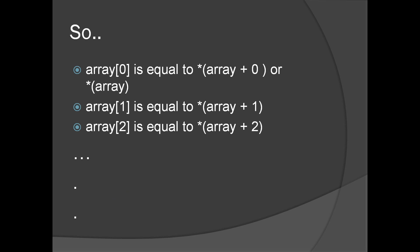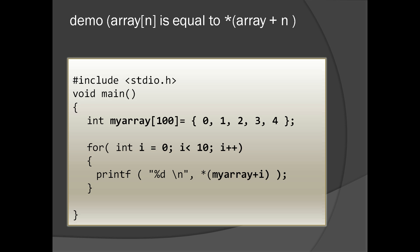a[0] is equal to *(array + 0). So dereferencing the first integer will give you array[0]. Similarly, array[1] equals *(array + 1), and array[2] equals *(array + 2). Let's prove that with the help of an example.